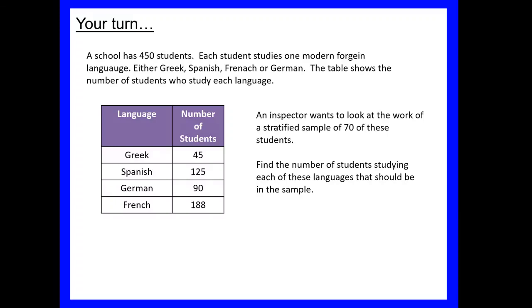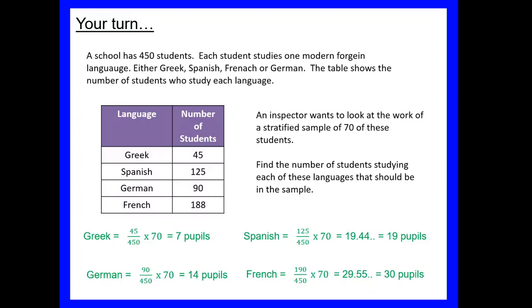Let's have a look at the solutions then. So first thing then, we knew we had 450 students, that told us that at the beginning of the question, but it is worth adding up our students to check. So for Greek, we had 45 out of 450, that's our fraction multiplied by our sample size of 70 this time, gave us seven pupils. For Spanish, 125 out of 450 times 70, 19.44, so again this time I've decided to round down to 19 pupils. For German we ended up with 14 pupils, and for French we got another decimal, 29.55, so in that case I've rounded up to 30 pupils. So again, just check at the end that they've added up to our 70 pupils. If you've rounded differently, you may need to adjust your rounding to make sure you do end up with an exact value of 70 when you add all of those together.